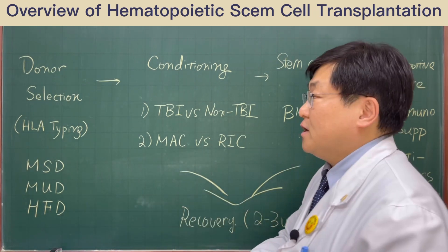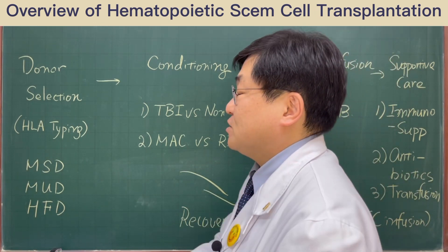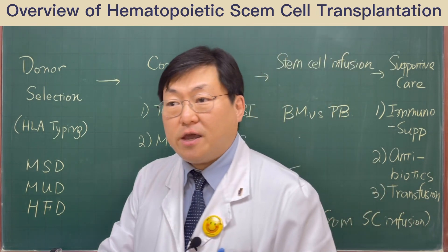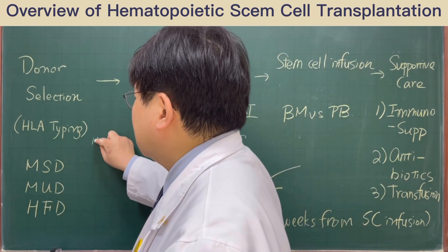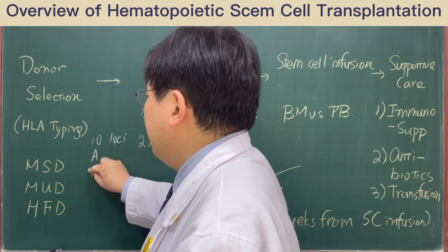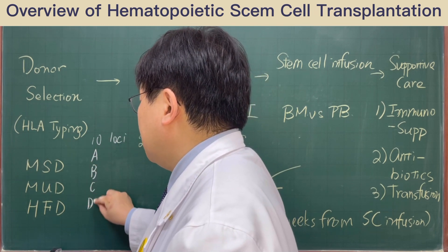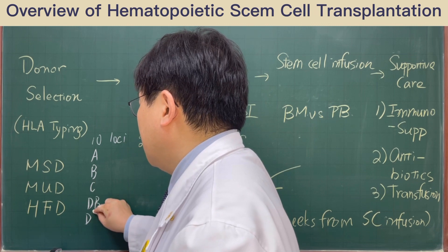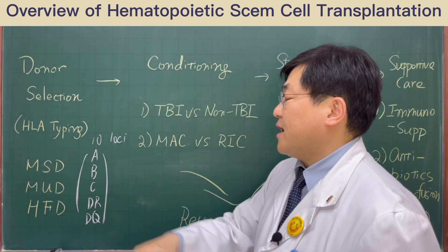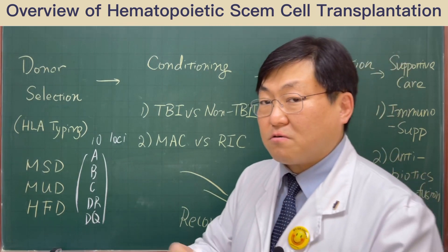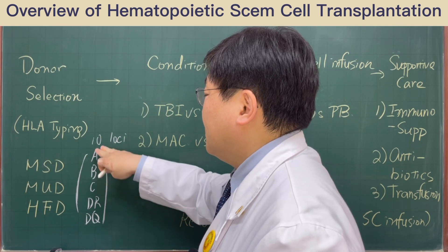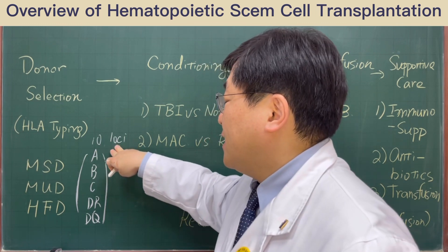If a patient requires bone marrow cell transplantation, the patient needs to take some blood tests to confirm the HLA typing. Usually, we check the HLA 10-locus loci: A, B, C, DR, DQ. This HLA is located on both sides of the chromosome, so we need to check 5 pairs, 10 loci on the chromosome.